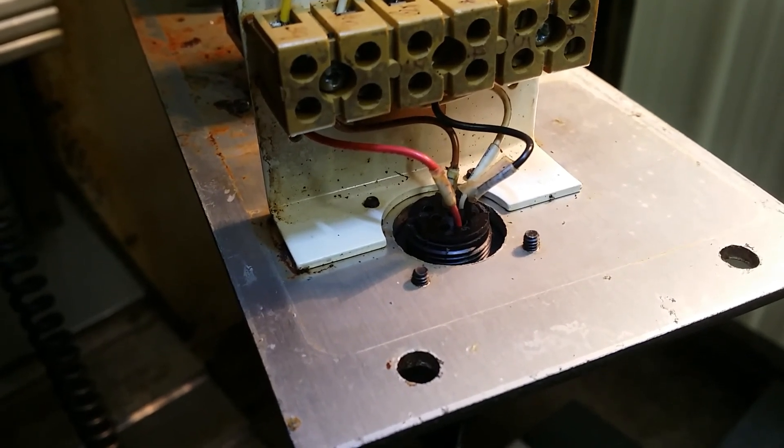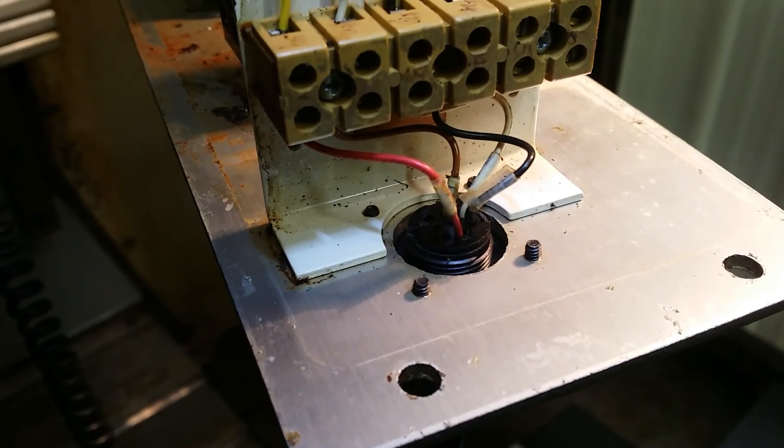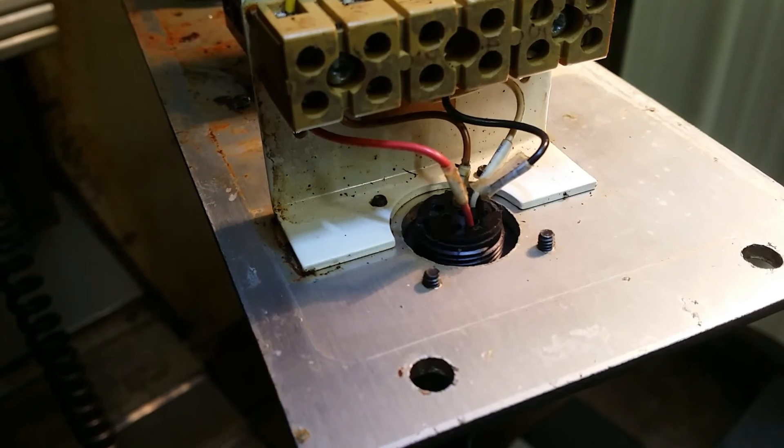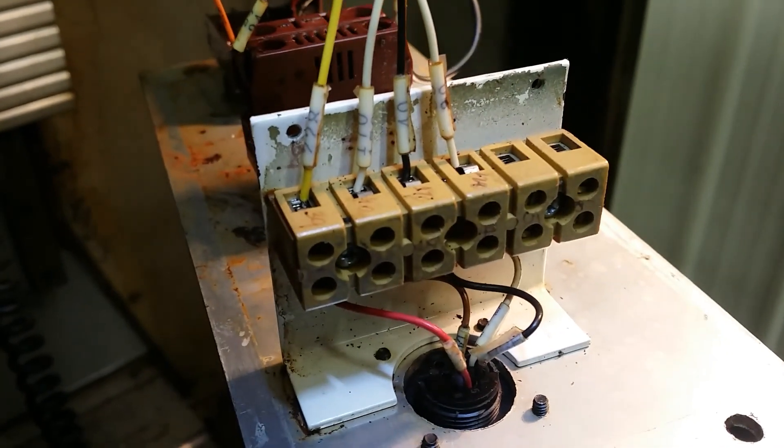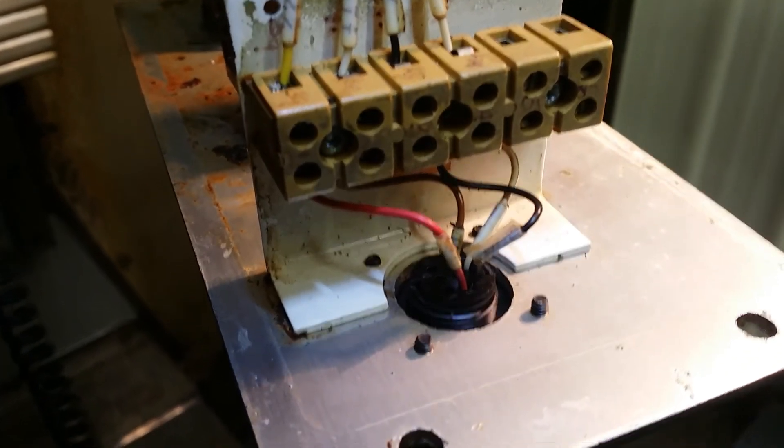Originally when we opened this area up to see what was going on, all the wires were disconnected. They were all cut right there on top of the block and taped up inside the cabinet.